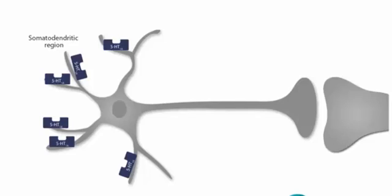5-HT1A receptors are expressed in the somatodendritic region of a serotonergic neuron. This picture is a schematic representation that emphasizes the role of 5-HT1A receptors as inhibitory autoreceptors.